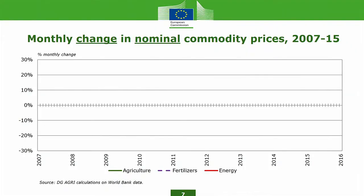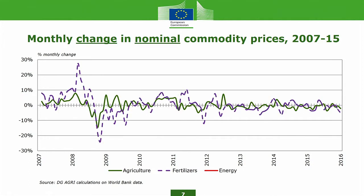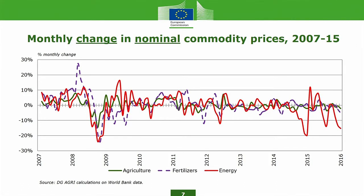If you look at the monthly change in nominal commodity prices, starting in 2007, you see pretty much the same thing. This is what has been happening in agriculture, and this is what has been happening in fertilizers. But the biggest difference this time around has been energy — and energy here is not just crude oil, it's also coal and natural gas, which has broken into three different markets.